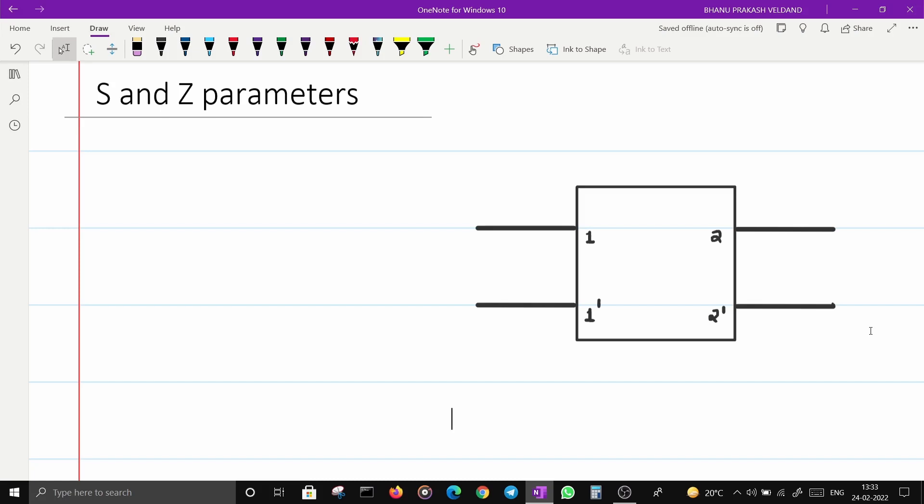S parameters are used to describe the relationship between different ports in terms of energies, not just voltages and currents. It discusses something with respect to waves—incident and reflected waves.